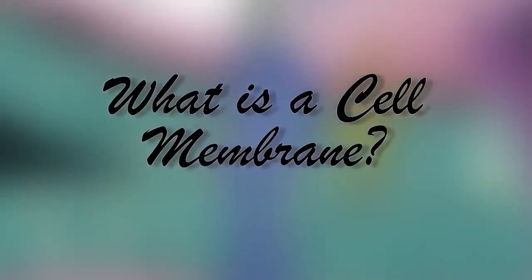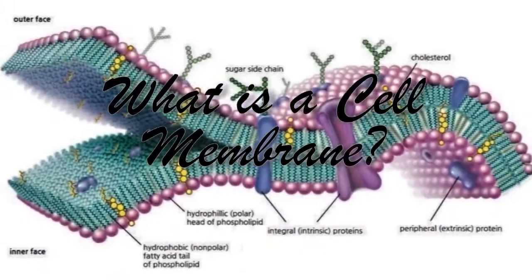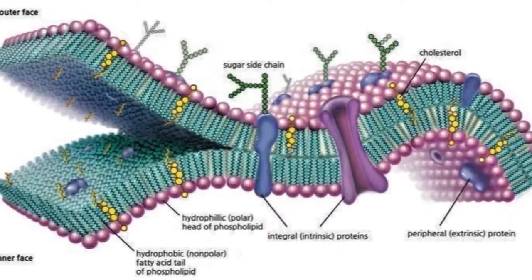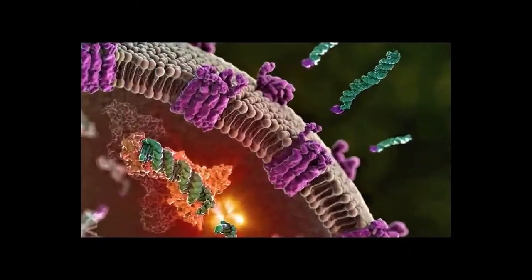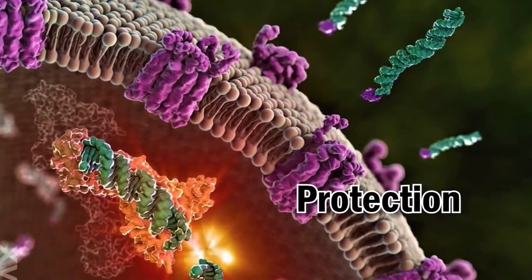First, let's define what is a cell membrane. The cell or plasma membrane is a semi-permeable membrane that surrounds the cell. Its main function is to protect the cell from its external environment.